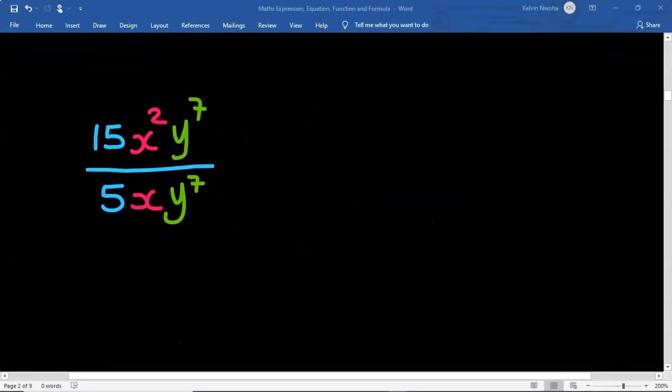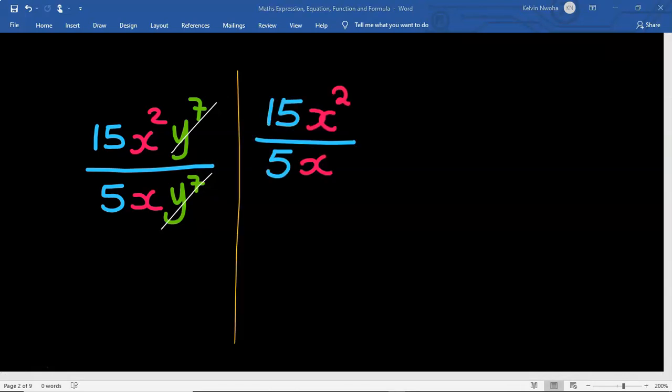Subsequently, if we consider this rational expression, y to the power of 7, we cancel out y to the power of 7. Next, 5 here is 1 and 5 here is 3. x will take over 1 of x. Finally, we are left with an expression of 3x.